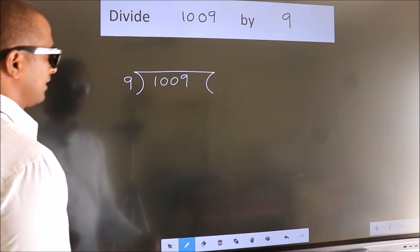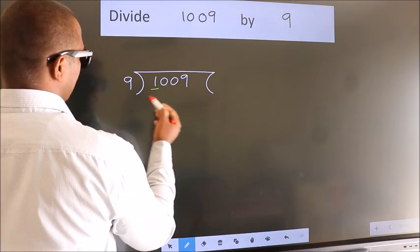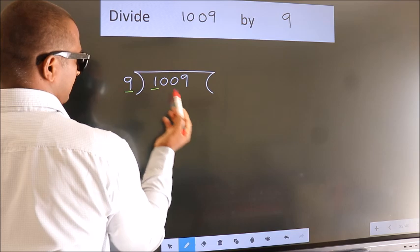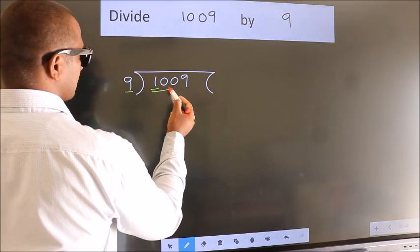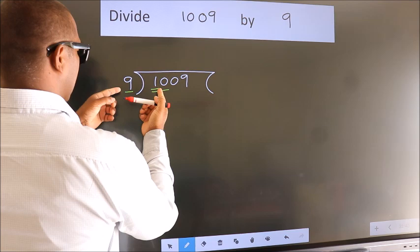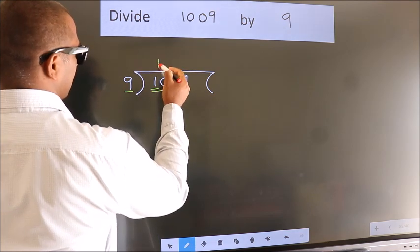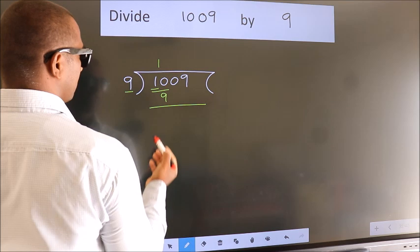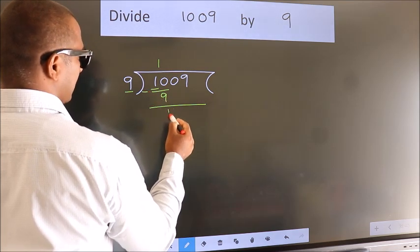Next. Here we have 1, here 9. 1 is smaller than 9, so we should take two numbers, 10. A number close to 10 in the 9 table is 9 ones, 9. Now we should subtract. We get 1.